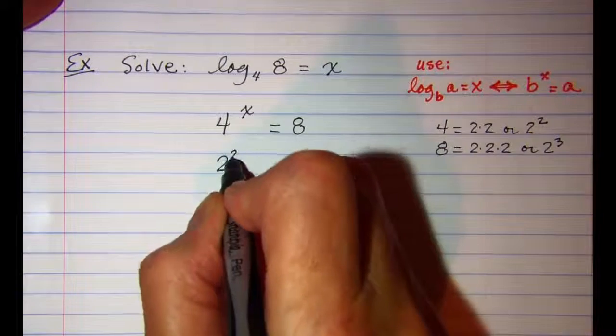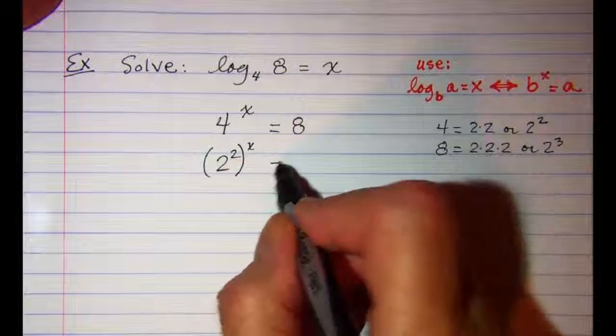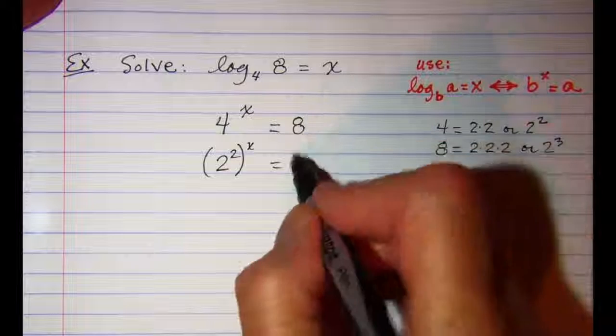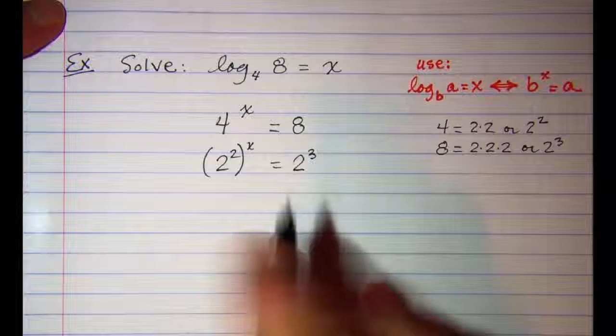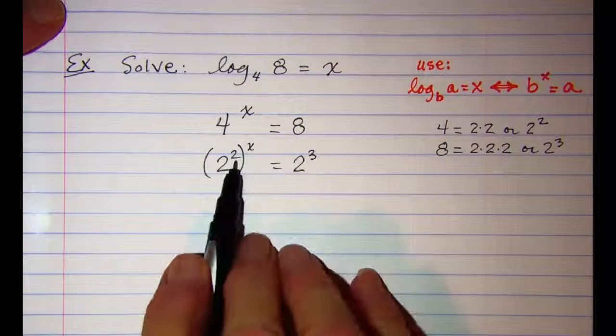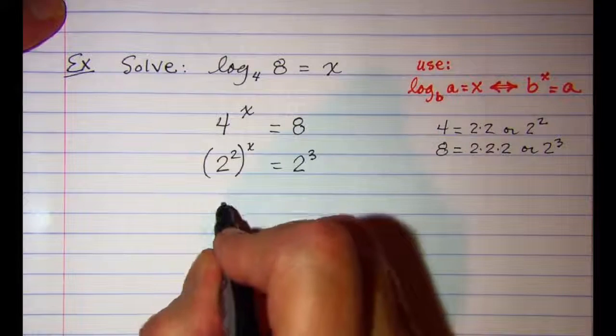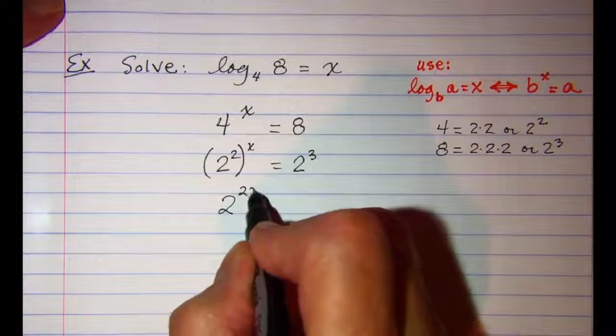So I'm going to rewrite my 4 as 2 squared and I'm going to rewrite my 8 as 2 cubed. Now whenever I have a power to a power, I have to multiply these exponents, so this left side is the same as 2 raised to the 2 times x power.